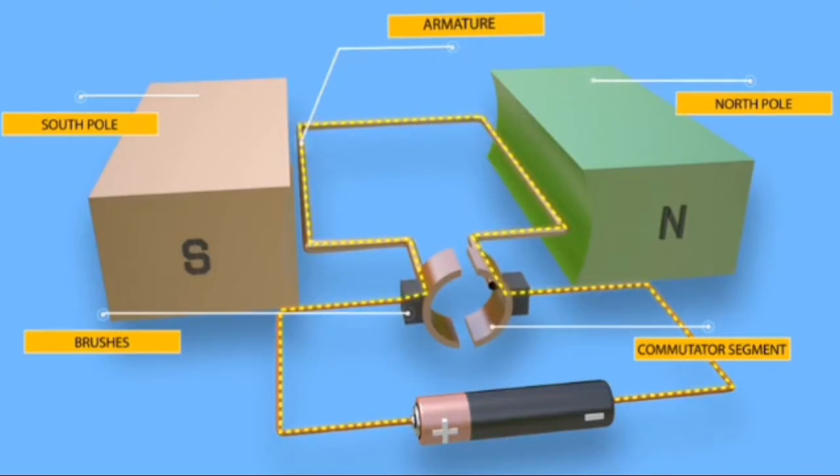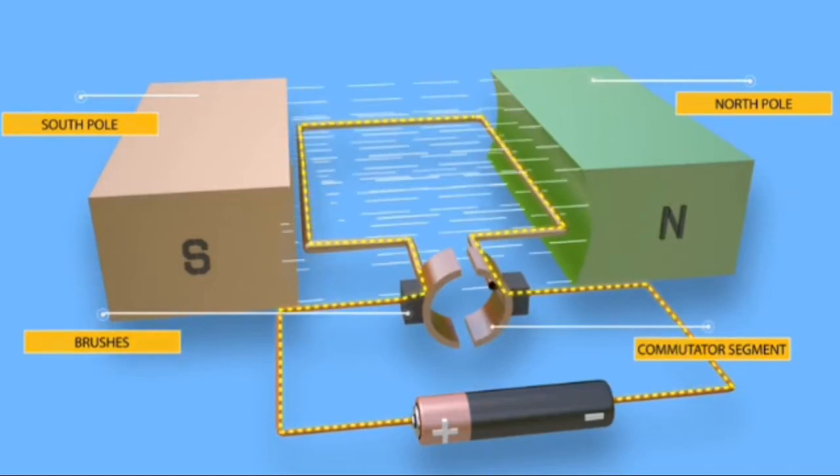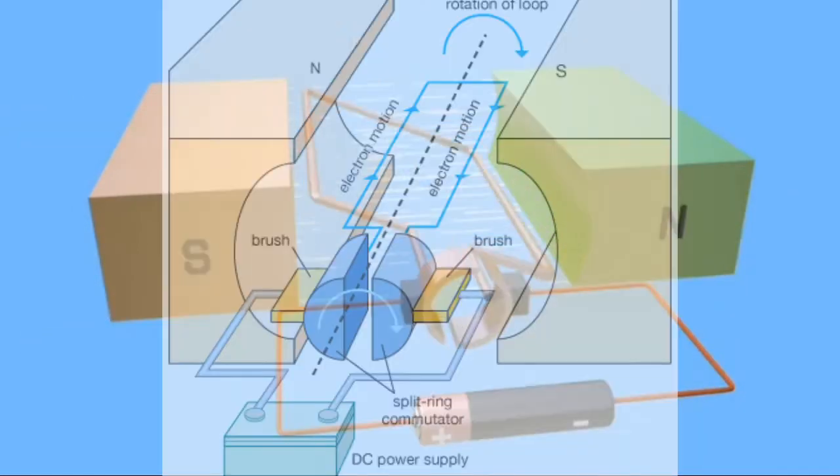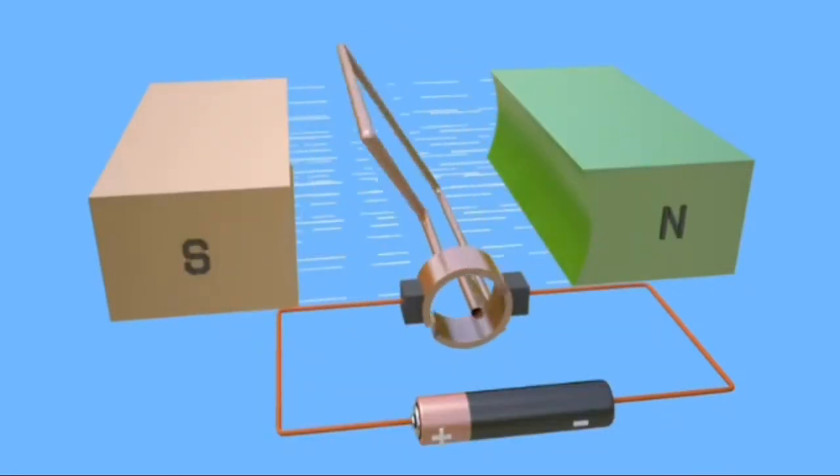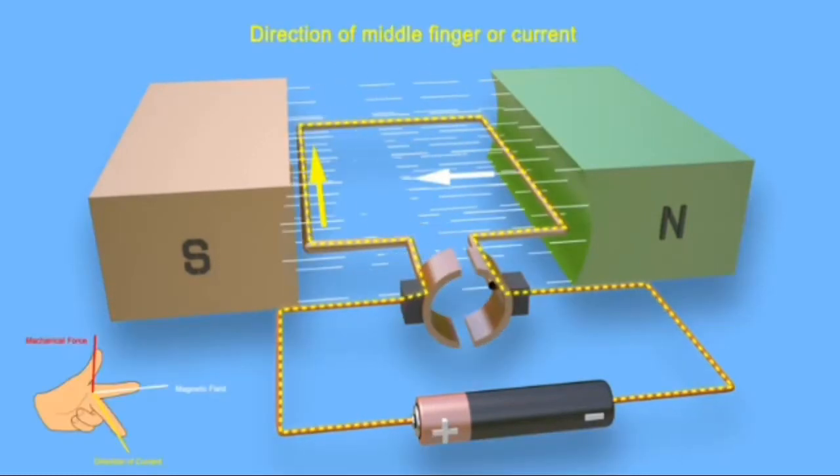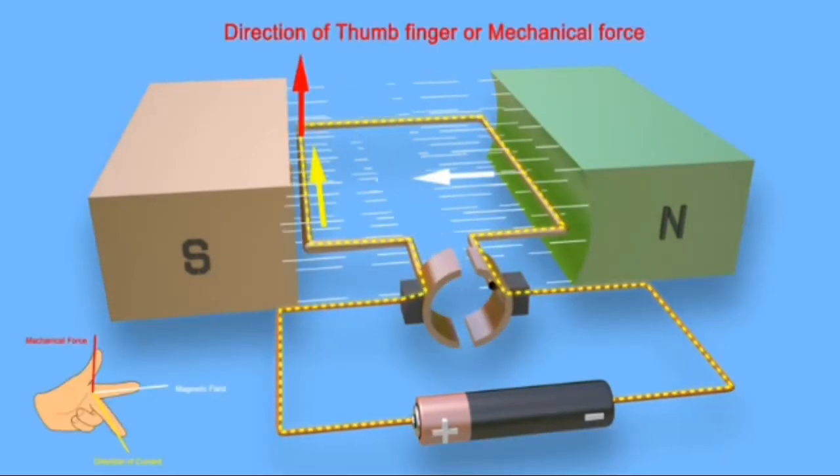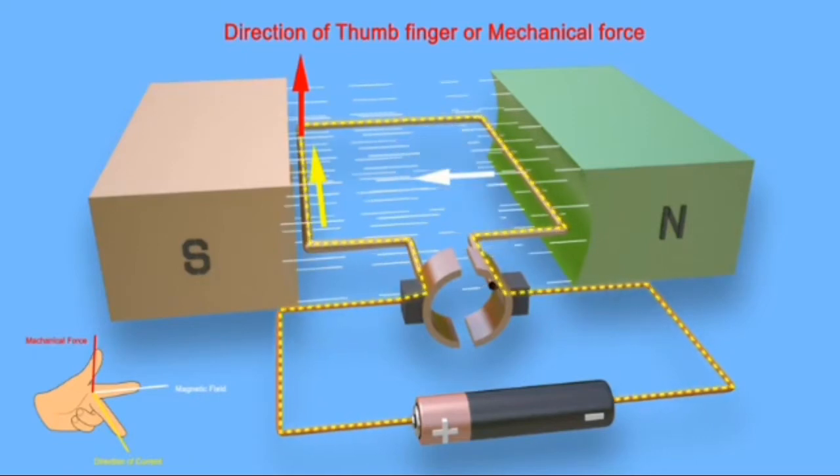As we see, conductors are carrying current and they are placed in magnetic field. Both of them experience a mechanical force acted on them. Direction of mechanical force can be easily determined by applying Fleming's left hand rule. Aligning the forefinger along direction of current in left side conductor, the thumb indicates direction of mechanical force.